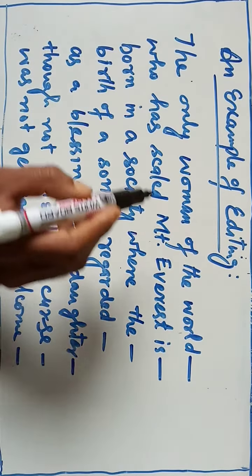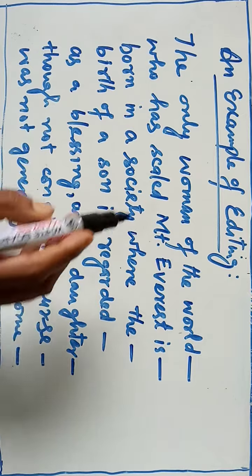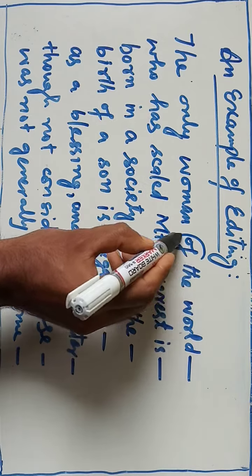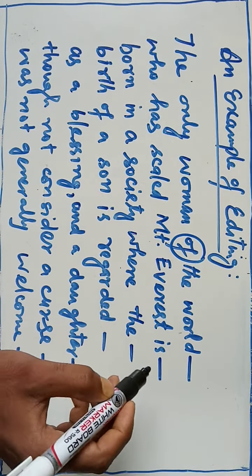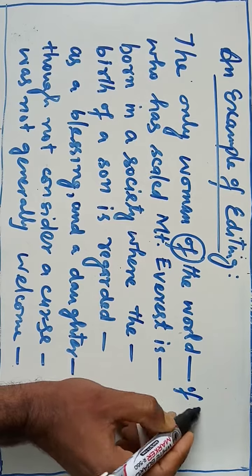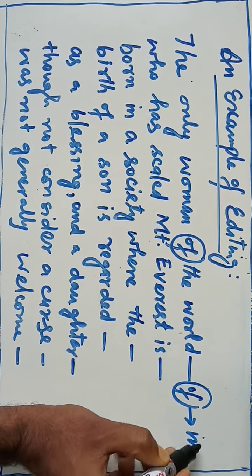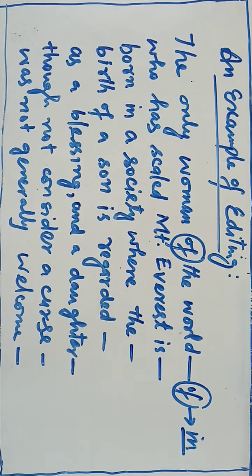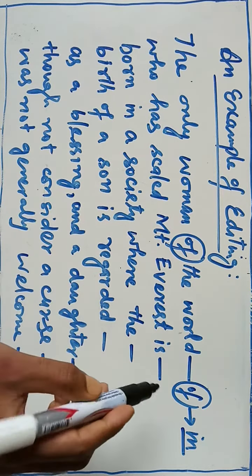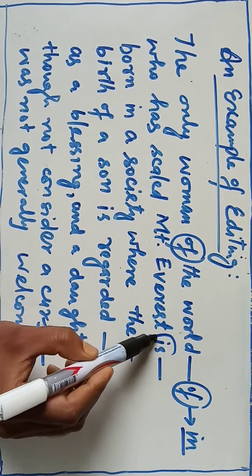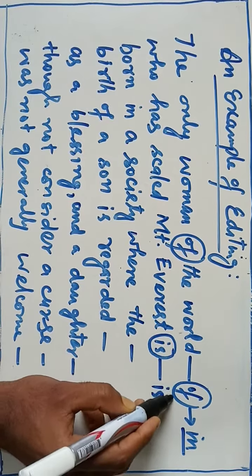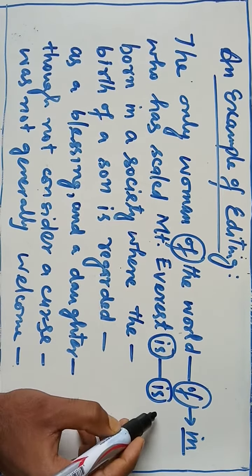So let's see how we are editing. The only woman in the world, so we have to read instead of 'of' we have to use here 'in' - the only woman in the world who has scaled Mount Everest. 'Is' - yeh auxiliary verb helping verb hai, 'is' ki present form hai. Yahan pe 'is' jo hai it's incorrect, is ko hum correct karte hain 'was' se.